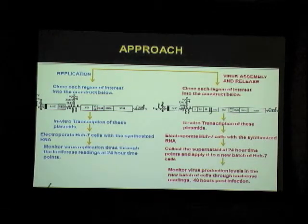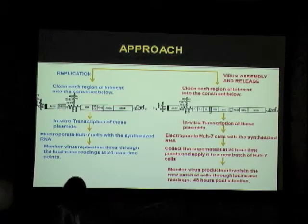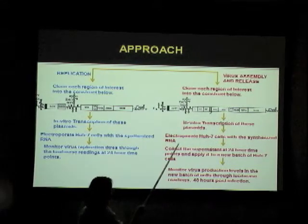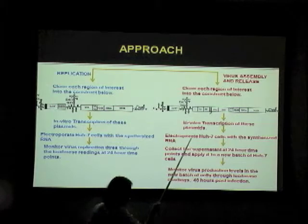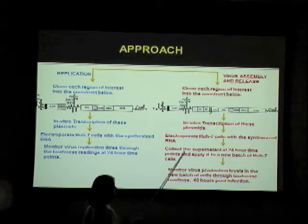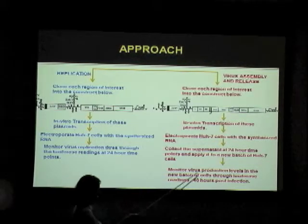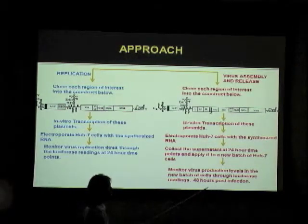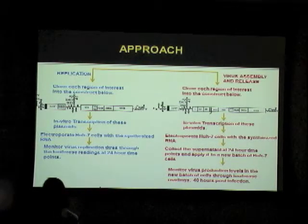For virus assembly and release, the protocol is more or less the same, but now we do have the structural proteins, so the virus would replicate as well as assemble and leave the cell. We again perform in vitro transcription and electroporate the cells with the synthesized RNA. The difference is that instead of monitoring replication levels, we collect the supernatant at 24-hour time points — assuming the virus has assembled and released into the supernatant. We then take that supernatant and subject it to another batch of cells, measuring luciferase readings 48 hours post-infection to get a titer value on infection levels.